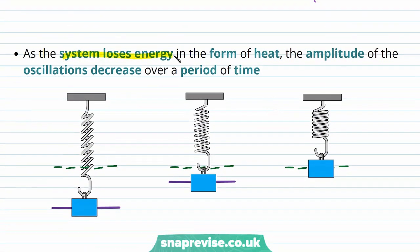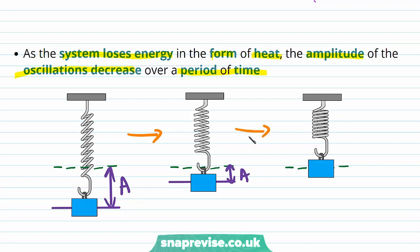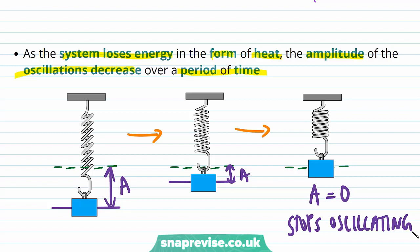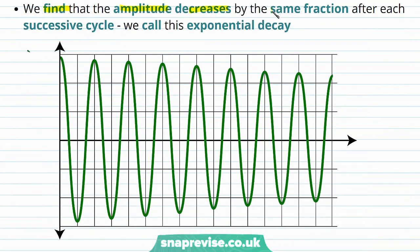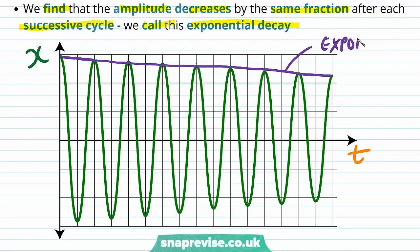As the system loses energy in the form of heat, the amplitude of the oscillations decreases over a period of time. Initially we have the mass oscillating with a large amplitude, and as time goes on the amplitude gets smaller until eventually the amplitude is zero and the oscillations stop. We find that the amplitude decreases by the same fraction after every successive cycle, and we call this exponential decay. Looking at a graph of displacement against time for light damping, you can see the amplitude of the oscillations decreasing over time — this is exponential decay.